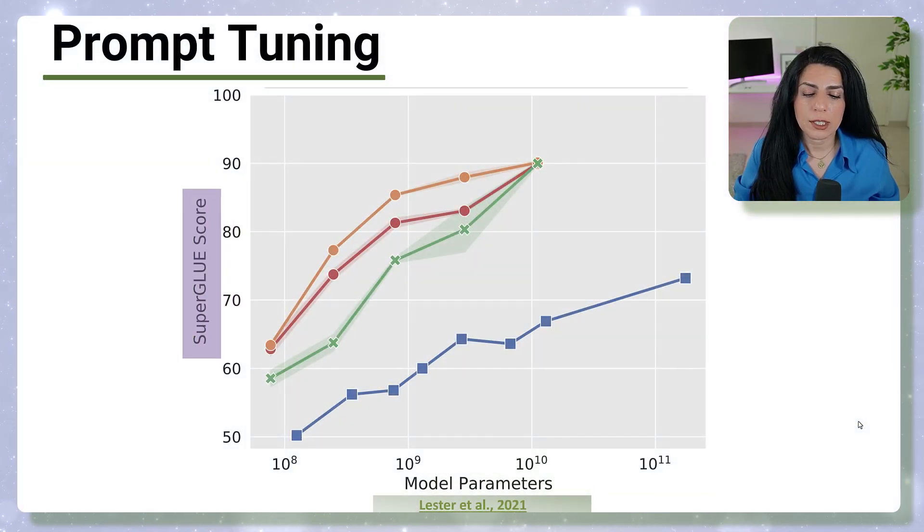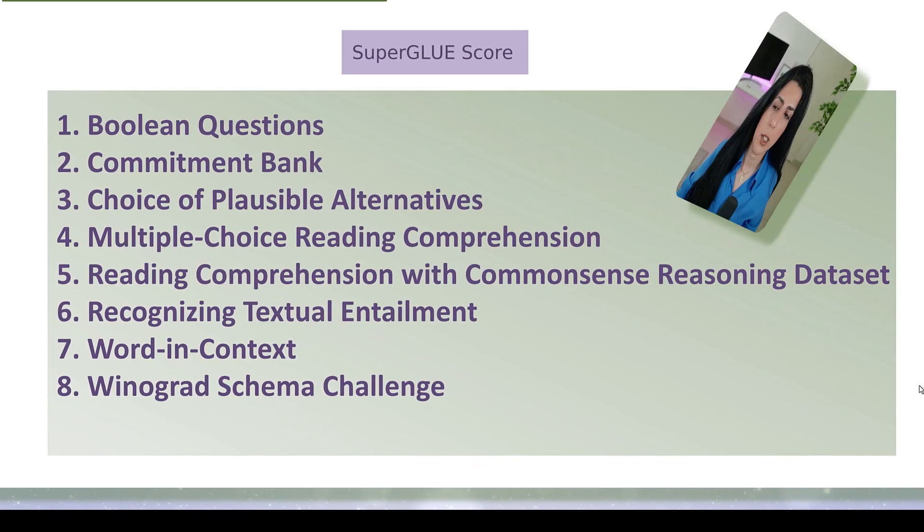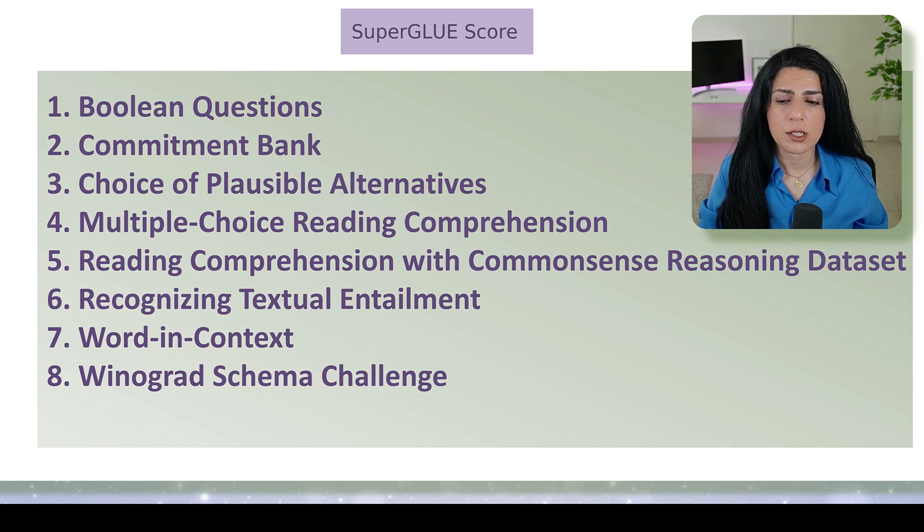This graph shows how great actually the prompt tuning will do, and it is based on the SuperGLUE score. If you don't know what is a SuperGLUE score, it's a combination of boolean questions and reading comprehensions and textual entailments and wording contexts and challenges, schema challenges. So basically a lot of good tests for the LLM.